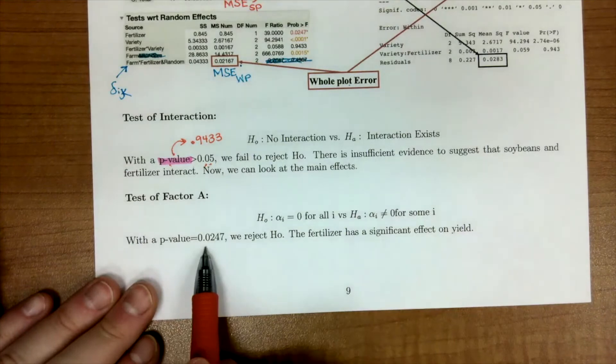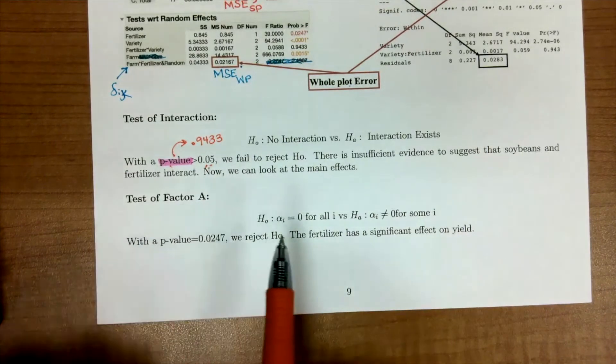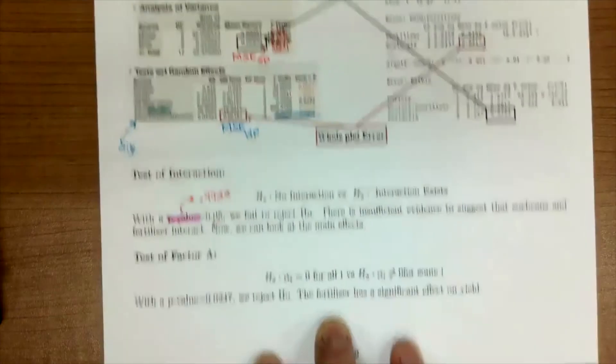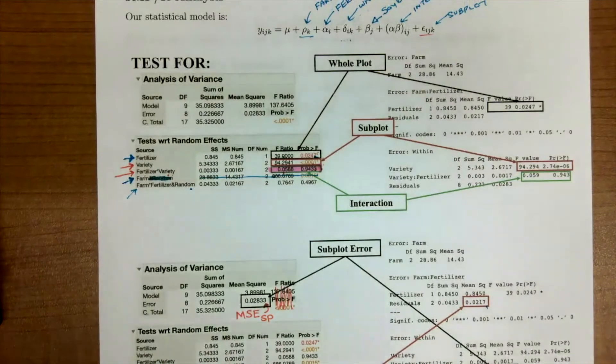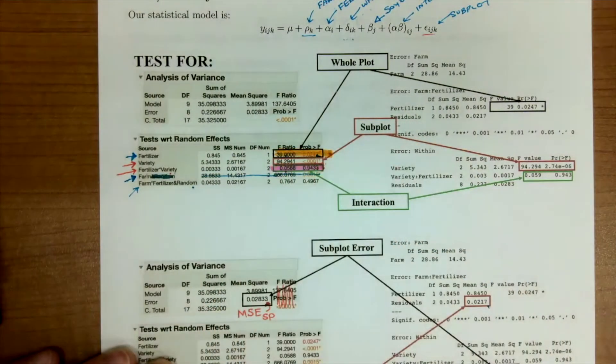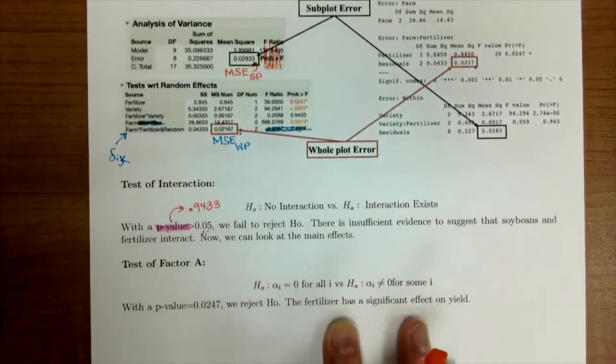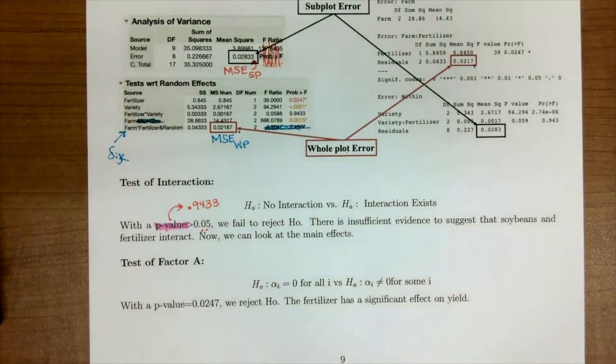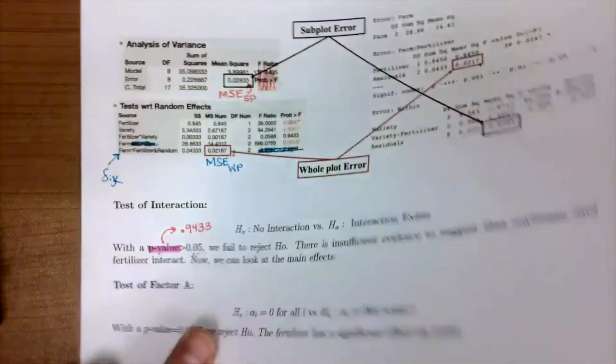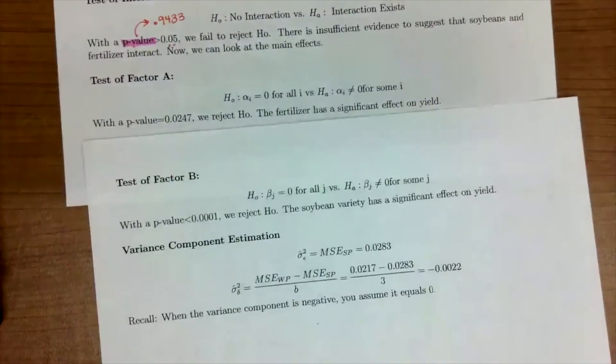So we say that there is no interaction and so we can look at our main effects. For factor A, we have a p-value of 0.024. This p-value for our factor A, which is our whole plot, comes from if we scroll back up here, it's coming from right here. From our test, we see that fertilizer does have a significant effect on our yield.